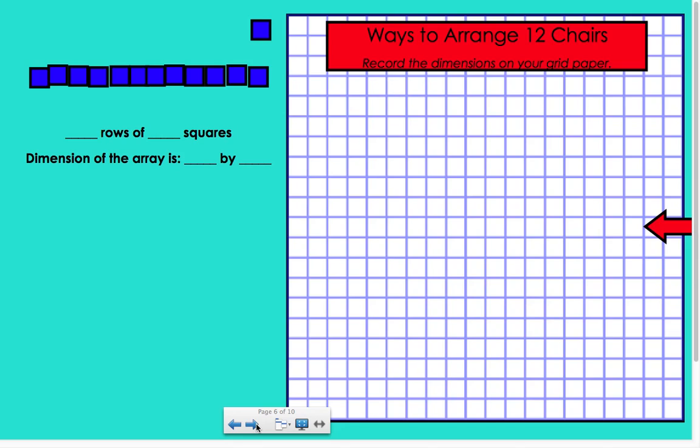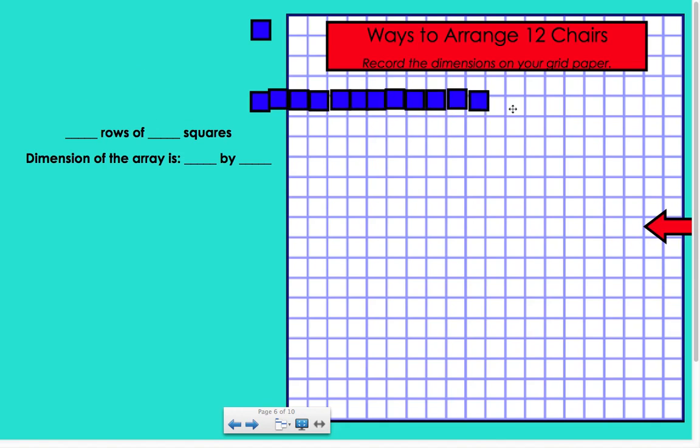Alright, let's compare the ways to arrange our twelve squares. Here, what I thought of was I first put my twelve in one row. So here's my one row with twelve squares. So on my grid paper, I'm going to go ahead and just place them nice and carefully on it.